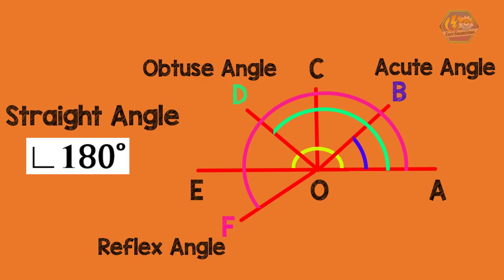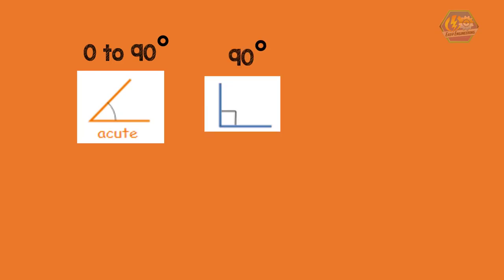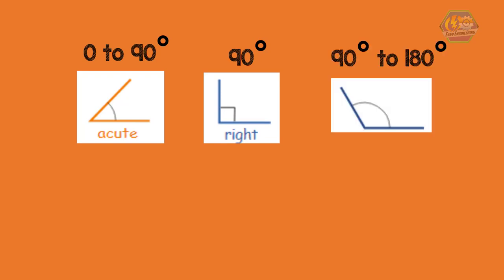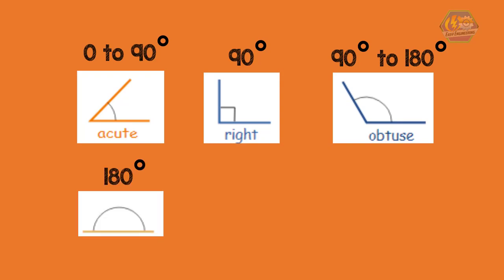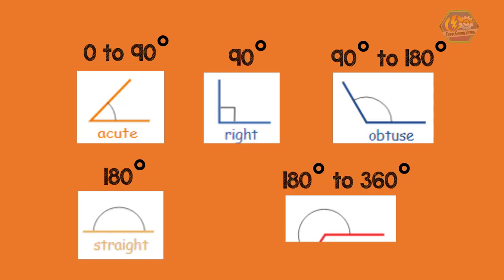So to summarize it all, if we move the terminal arm anywhere between 0 and 90 degrees then it is called an acute angle. Now if we move it to 90 degrees it will form a right angle. And if we move again the terminal arm between 90 degrees and 180 degrees, then it is an obtuse angle. And at 180 degrees we get a straight line or straight angle. And lastly, if we move the terminal arm between 180 degrees and 360 degrees, then it is called the reflex angle.